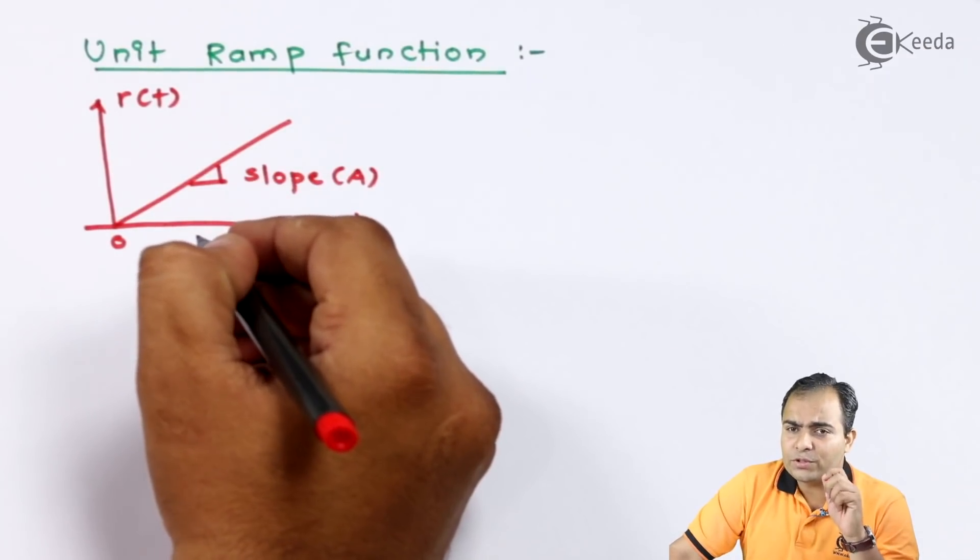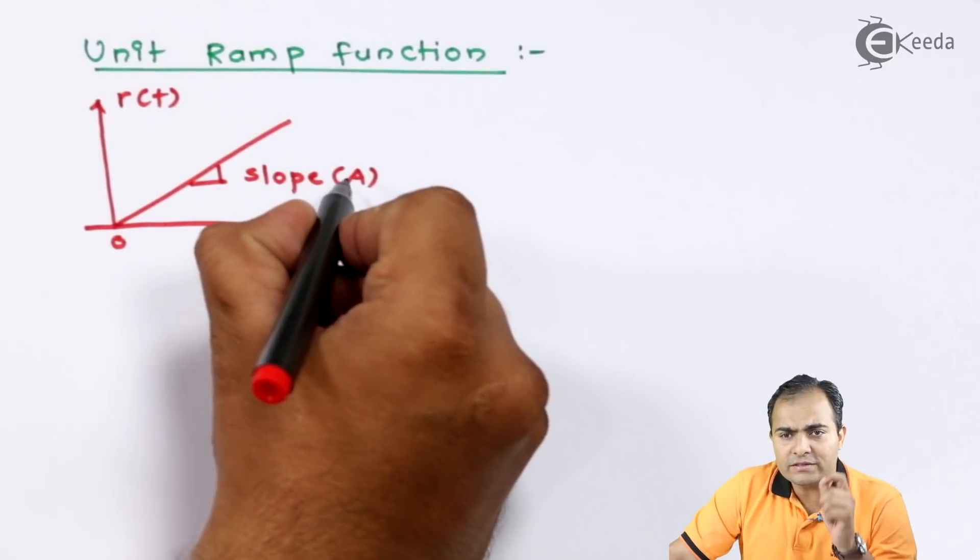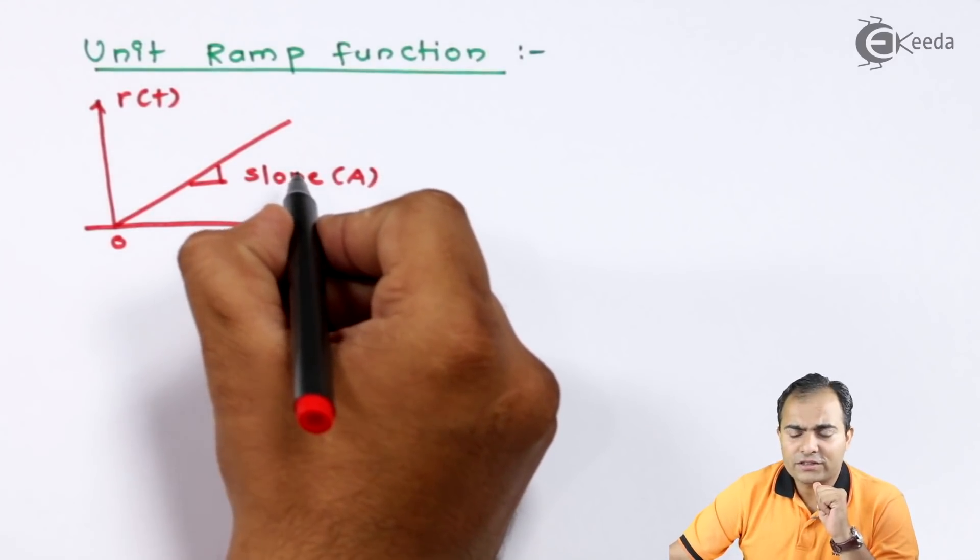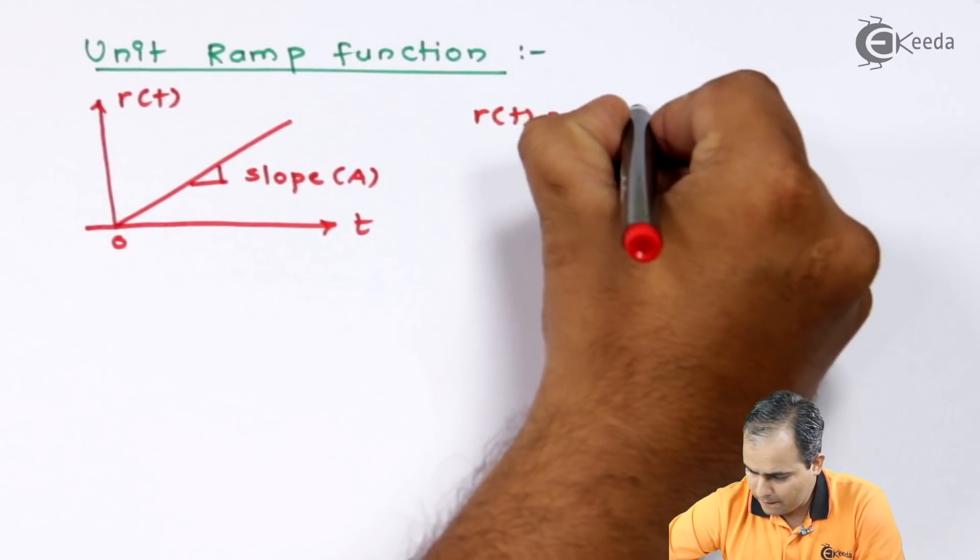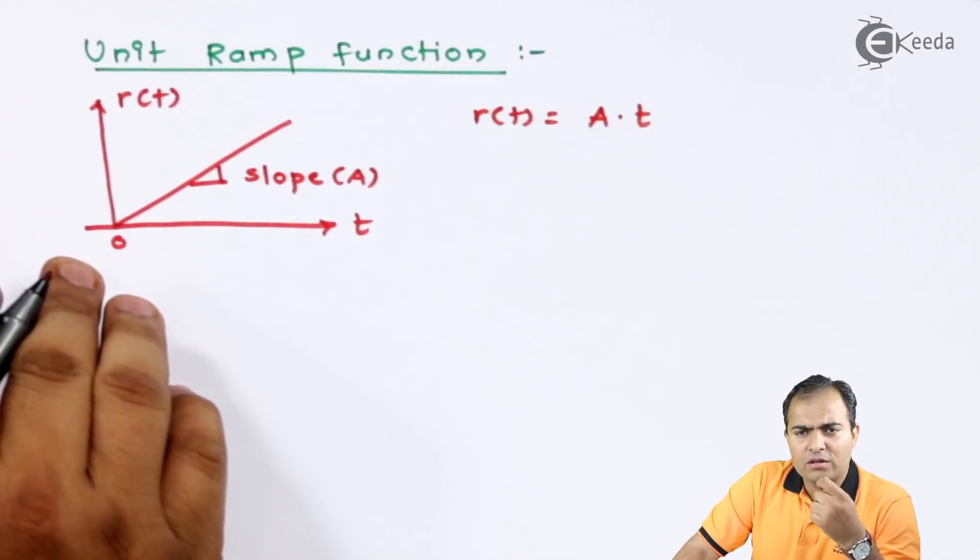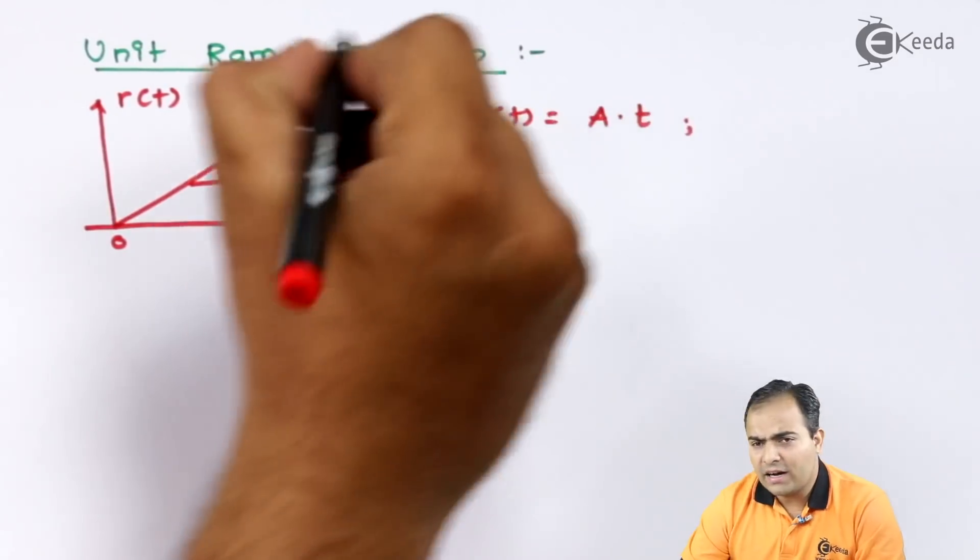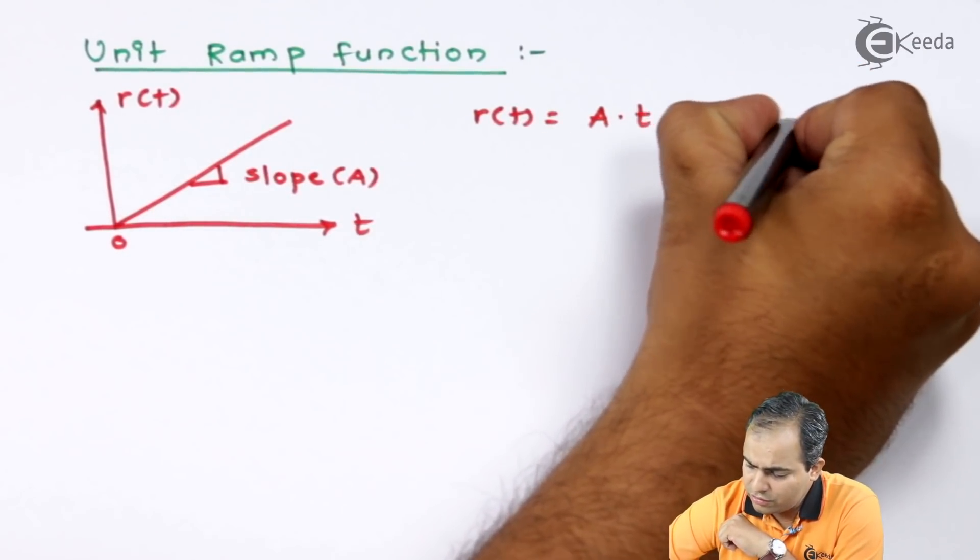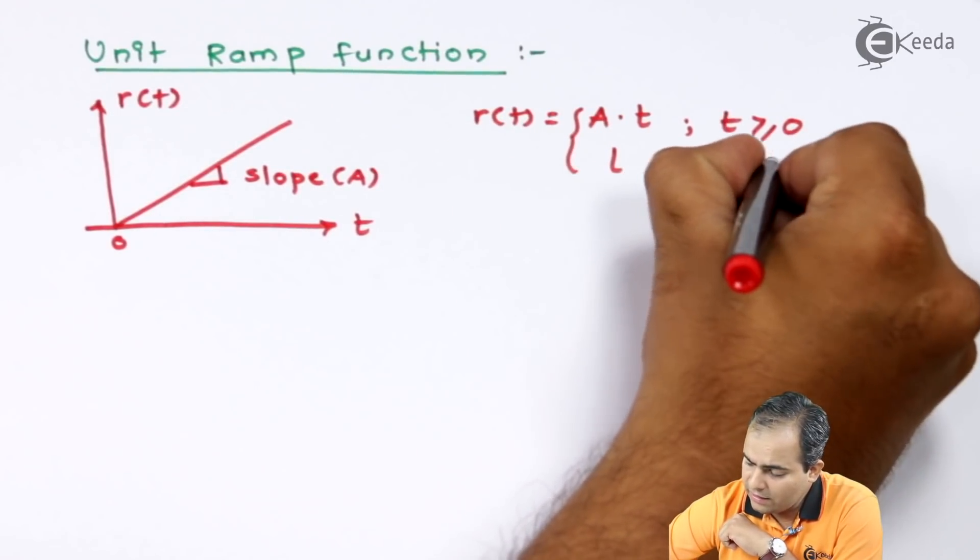At t equals to 0, if you consider or if you take a value 1, this a value is 1. Then, this function, first of all, how to represent this function is like R(t) equals to slope into its time, because this graph always depends on the slope as well as the time.